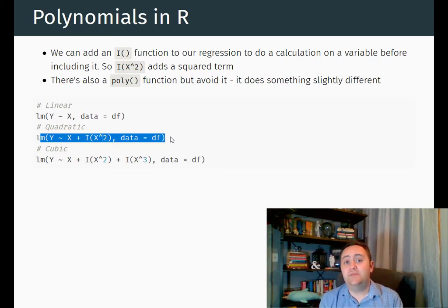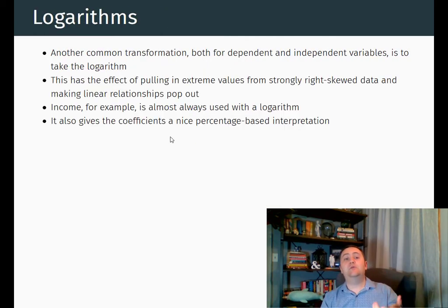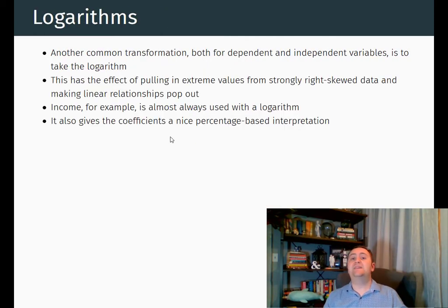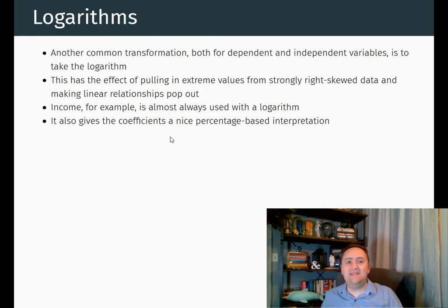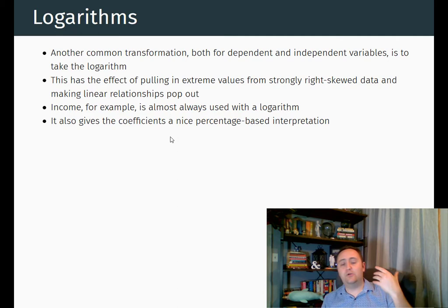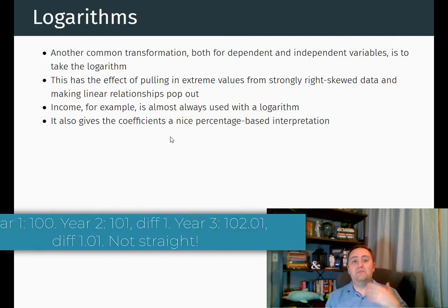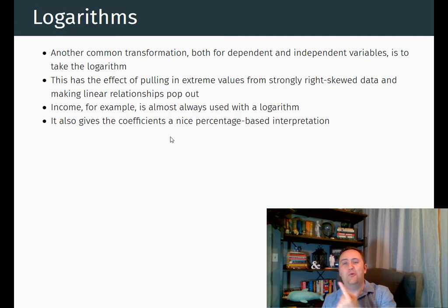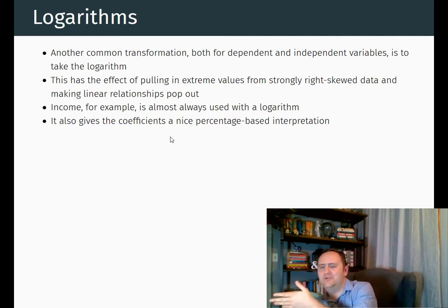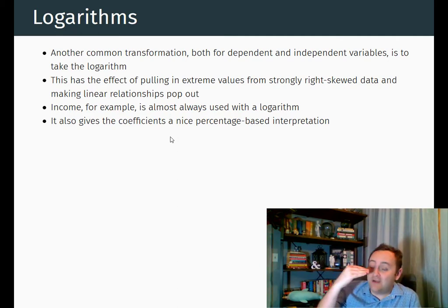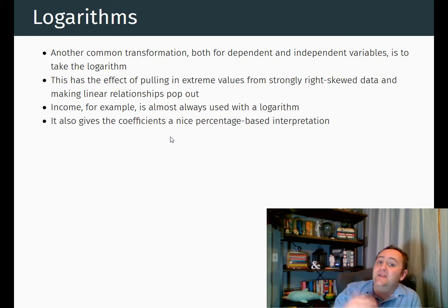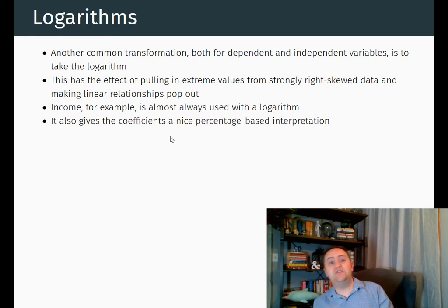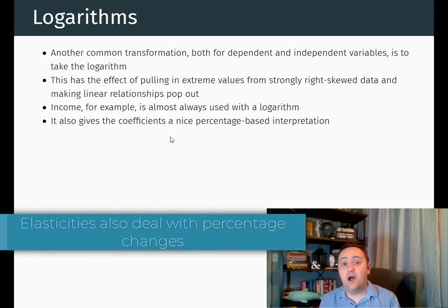Another common transformation used to fit non-straight lines is logarithms. This is very common in economics because it helps deal with data that is highly skewed, and also with relationships that are exponential. For example, anything involving percentage growth — straight lines don't really fit percentage growth. If something grows at one percent a year and you start with 100, the first year you gain one, the second year 1.01, the third year 1.02 or 1.03. The actual additional change for a constant percentage growth is different each time, so it won't be a straight line. Anything dealing with percentage changes, exponential changes, or growth is probably going to need a logarithm.